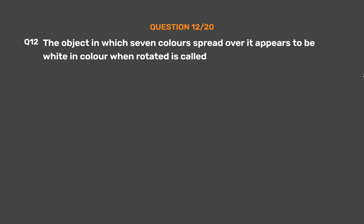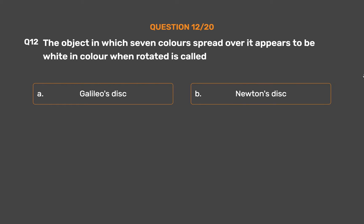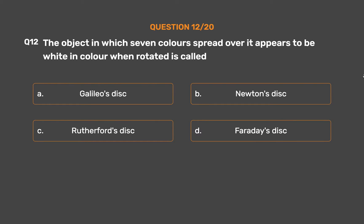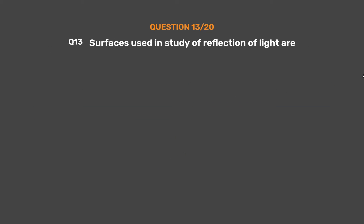Question number 12. The object in which 7 colors spread over it appears to be white in color when rotated is called: option A, Galileo's disc; option B, Newton's disc; option C, Rutherford's disc; option D, Faraday's disc. The correct answer is option B, Newton's disc.